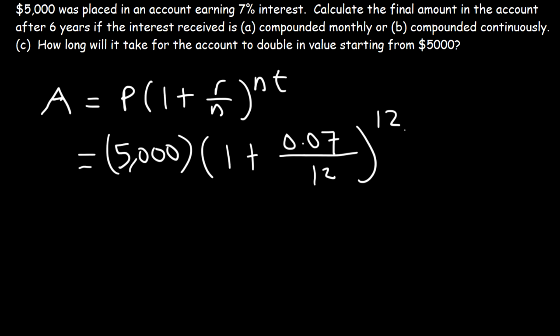By the way, if it's compounded daily, what is the value of N? There's 365 days in a year. So if you hear the word daily, N is 365. Weekly, N is 52. Quarterly, N is 4. Semi-annually, N is 2. Annually, N is 1.